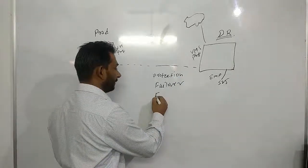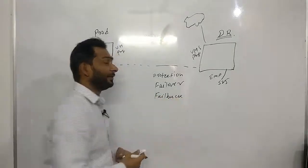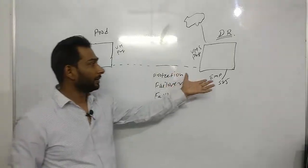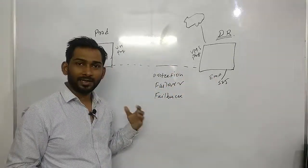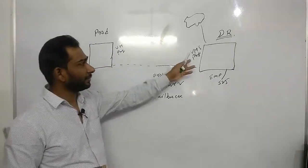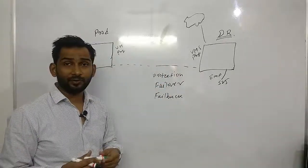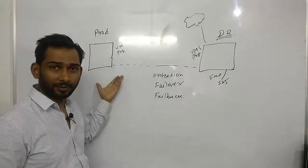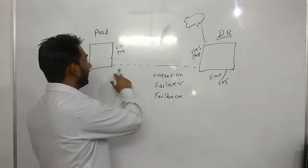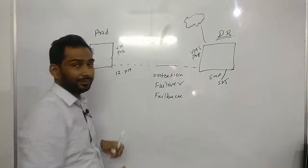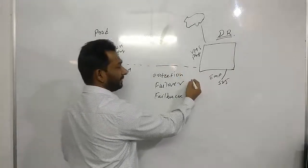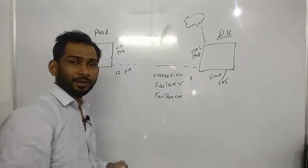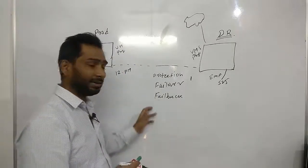Another term is failback. Failback means once your production site is restored and you want to move your DR workload back to production, that procedure is called failback. For example, VMs and physical servers were recovered at the DR site, and you need whatever change data is not yet available at production to be replicated back. Let's say disaster happened at 12 p.m. and recovery took four hours — I'll explain RTO and RPO in more detail shortly.